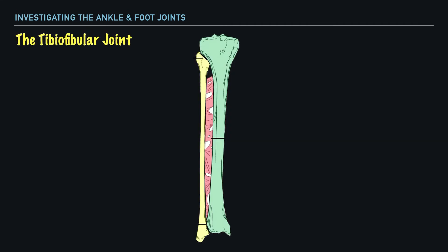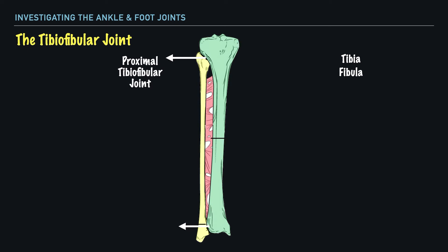The first joint we'll take a look at is the tibiofibular joint, which is the articulation between the tibia and fibula, joined together at both the proximal and distal ends, making them the proximal and distal tibiofibular joints. These joints are also joined together by an interosseous membrane, shown here in pink, that provides added support. One point of note is that it's at the distal tibiofibular joint where high ankle sprains occur. We'd classify these joints as syndesmosis joints.